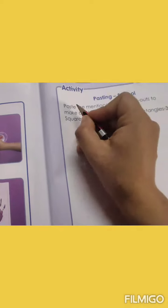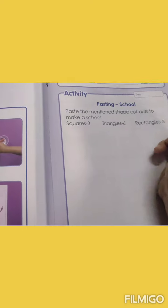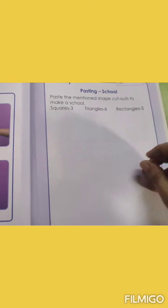Pasting school. Paste the mentioned shape cutouts to make a school. What we have to do here children, we have to cut out the shapes of different squares, triangles and rectangles. Then we have to make one picture of a school.